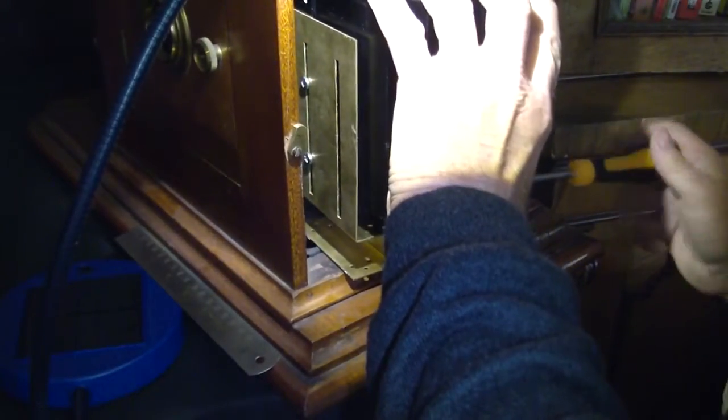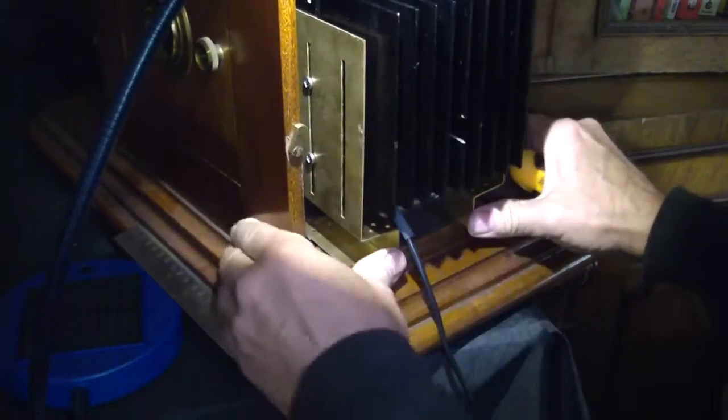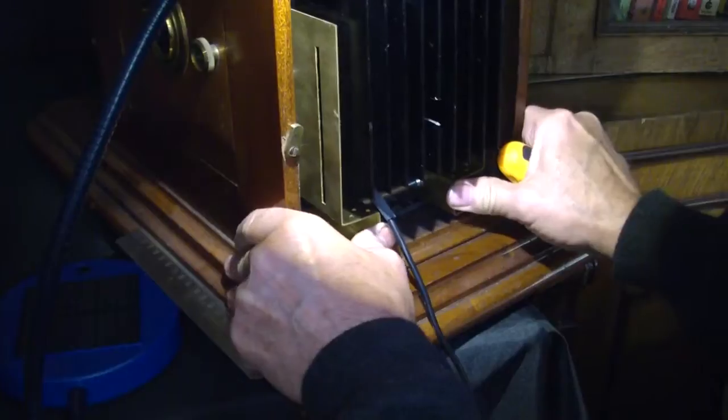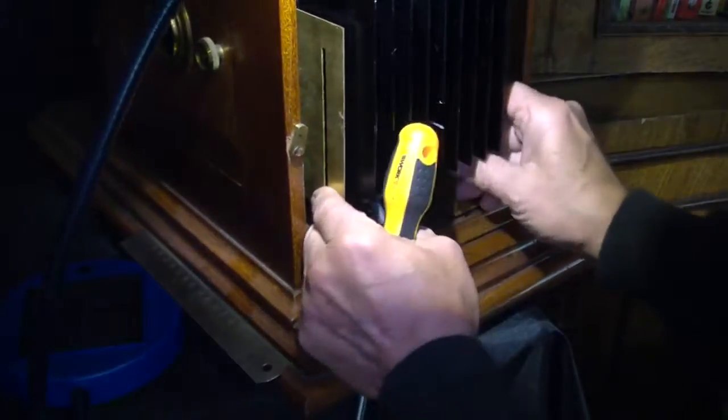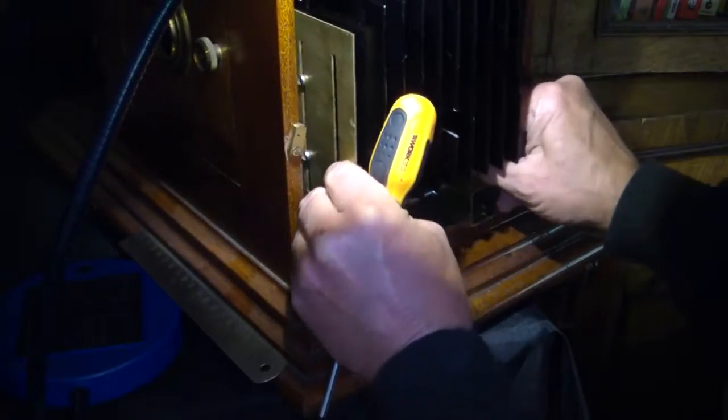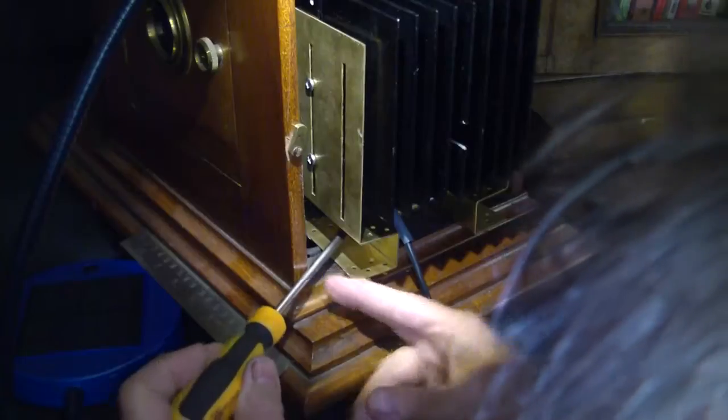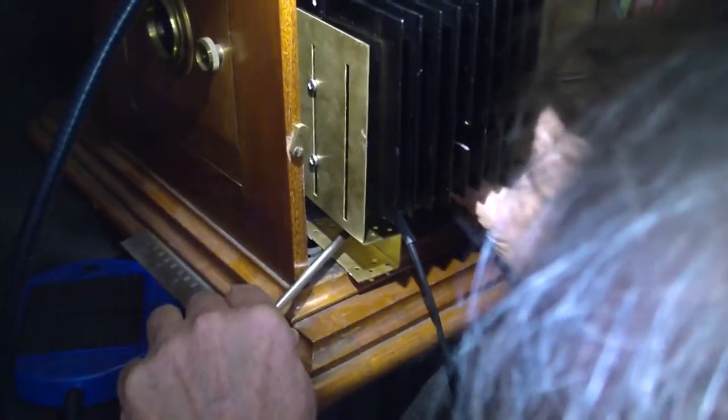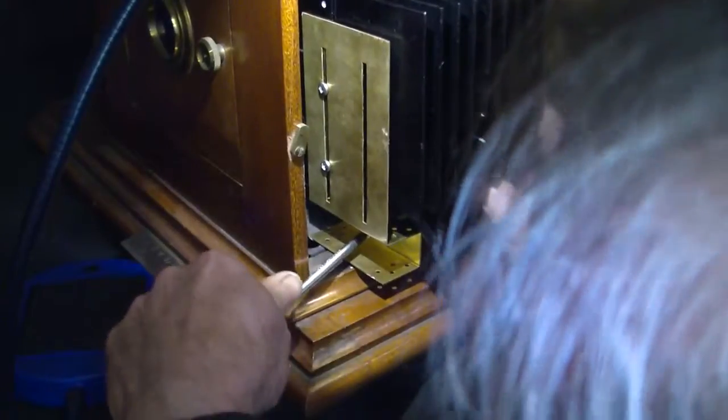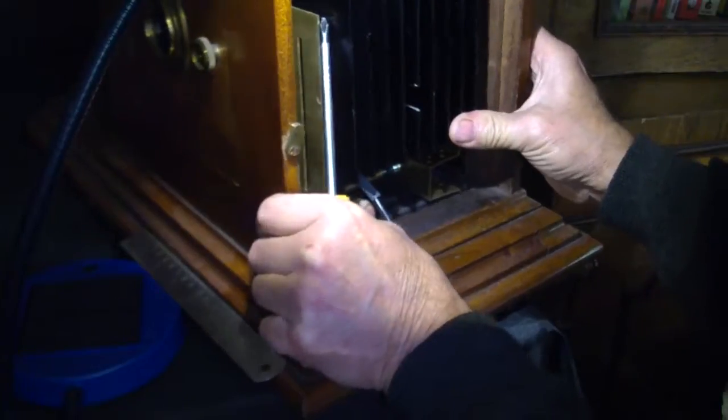Of course, if your lantern doesn't have a tray and has a floor instead, then there are holes provided in the feet so that the whole unit could be screwed with wood screws or whatever into the base of the lantern. In which case all this procedure we've just been showing you is somewhat unnecessary.